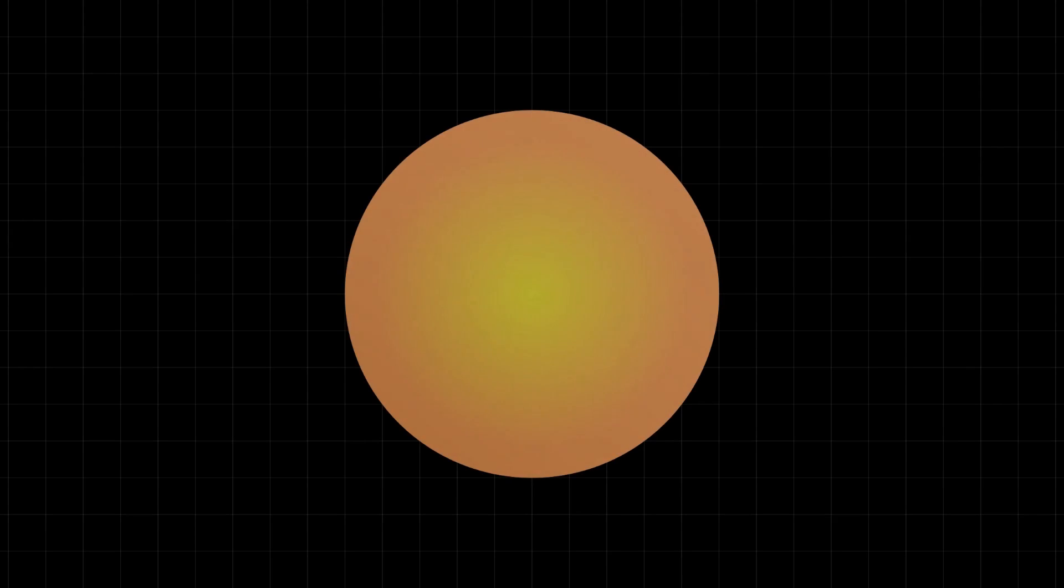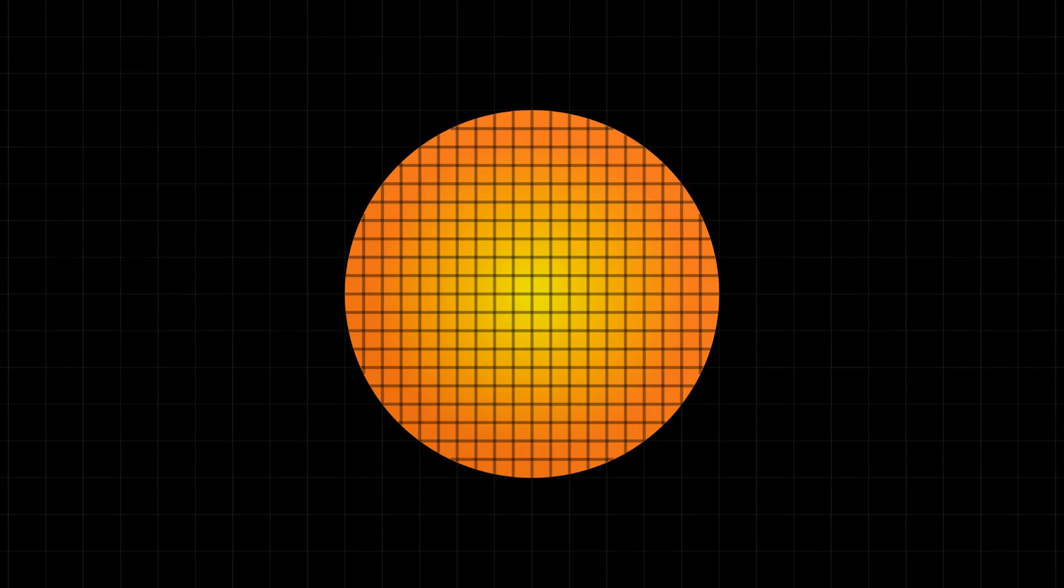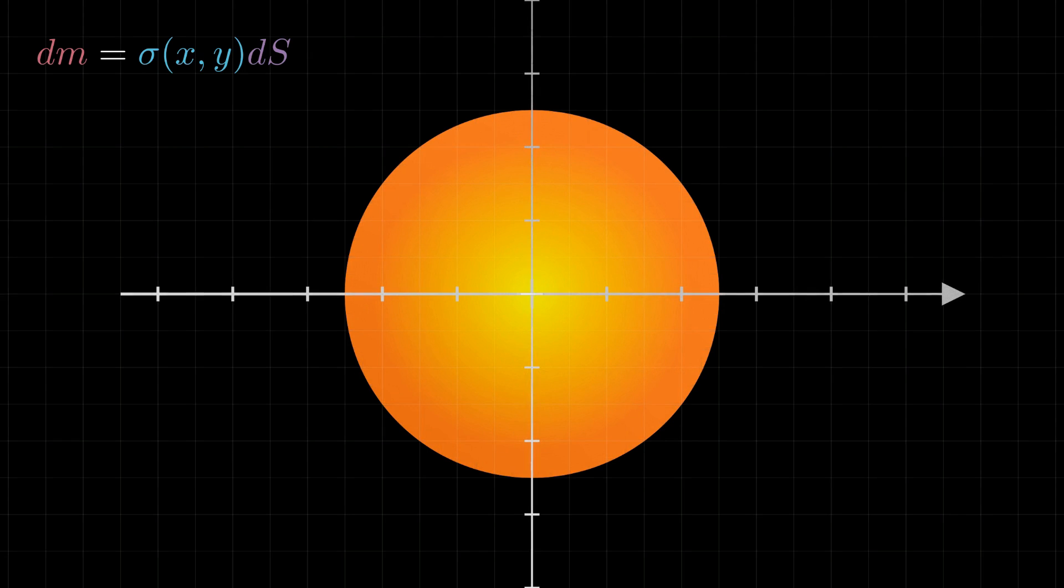Remember our one meter circular plate? We still haven't figured out if we can lift it. The best thing to do is to divide this plate into many tiny rectangles that have an area ds equals to dx times dy. Every rectangle will have a different mass, depending on how far it is from the center. So, every tiny mass would be equal to the depending position density times the area of the rectangle.